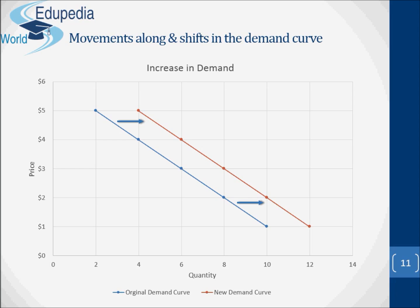A rightward shift shows that at each price more will be demanded than before. Thus, at a price of P, a quantity of Q was originally demanded, but after the increase in demand, a greater quantity is demanded. If a change in a determinant other than price causes demand to fall, the whole curve will shift to the left. To distinguish between shifts and movements, it is usual to distinguish between a 'change in demand' and a 'change in the quantity demanded.'